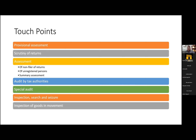The categories are: provisional assessments, scrutiny of returns, an assessment which the department does for you, audit by tax authority, special audit, inspection search and seizure, and inspection of goods in movement. These are the key instances when there will be a need for you to have interaction with the tax authorities. It is important to understand the concept behind these provisions — when the law specifically says there is a need to interact with revenue authorities.